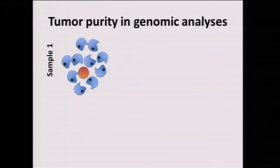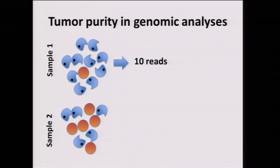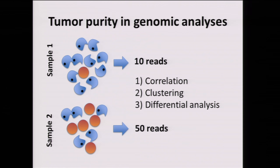The second part is tumor purity in genomic analysis. Here is a simple example: we have a sample with 90% cancer cells and 10% normal cells, and we measure some gene and get 10 reads. We have another sample with 50% cancer cells, and we measure the same gene and get 50 reads. A naive explanation would say this gene is five-fold highly expressed, but when you see the composition, you understand that this difference is partly driven by the orange cells. This affects all bioinformatic analyses — correlation, clustering, and differential expression analysis.